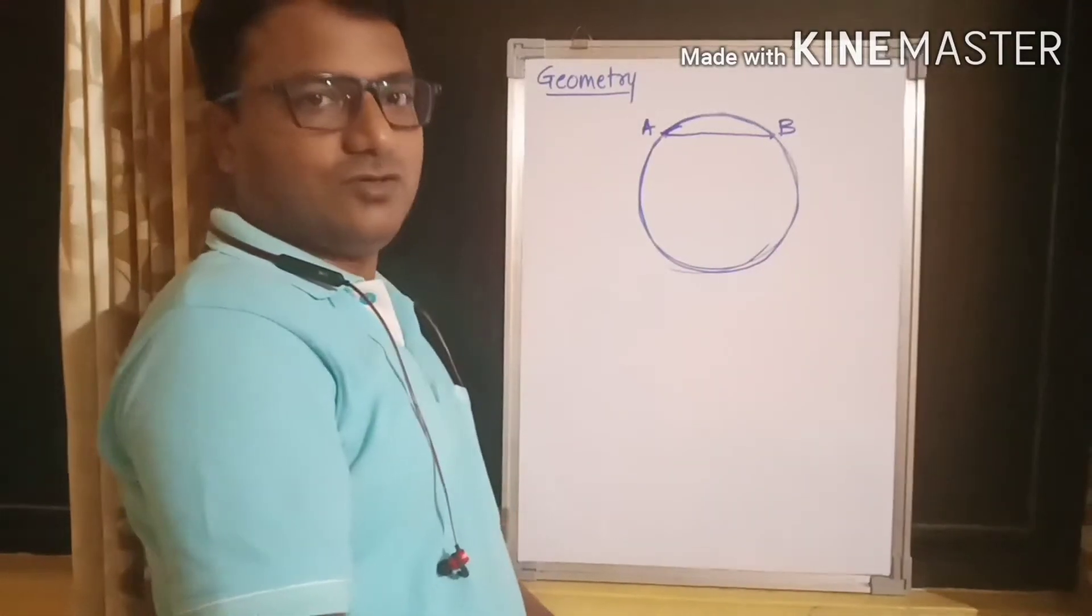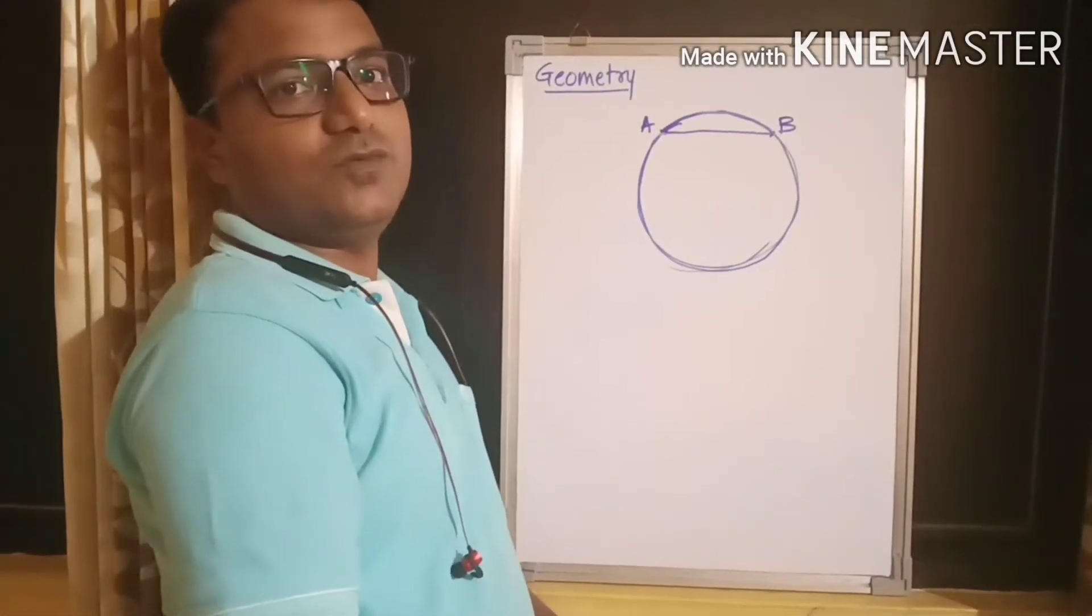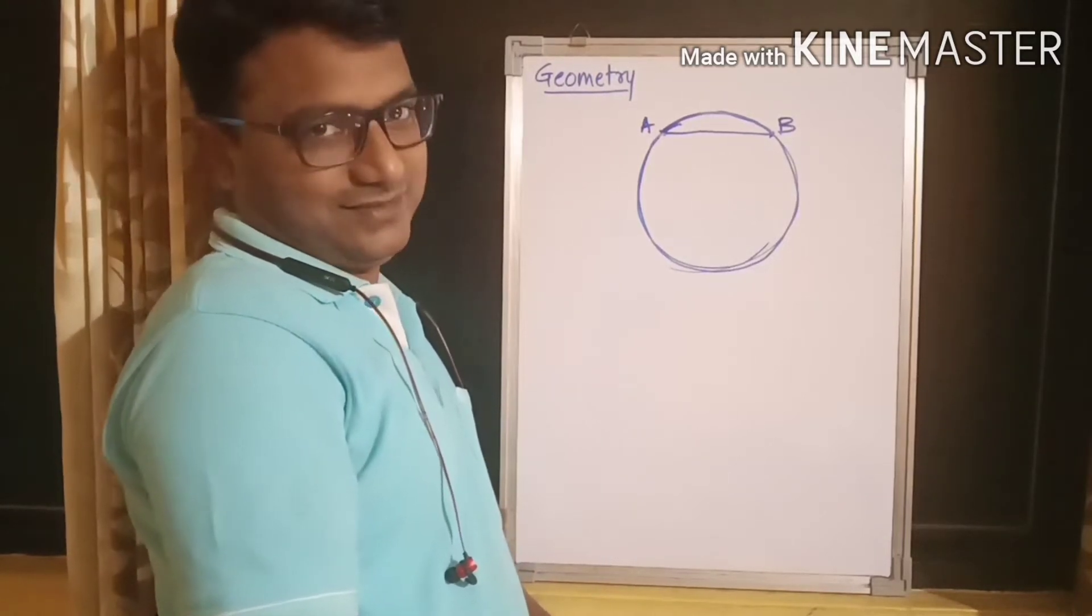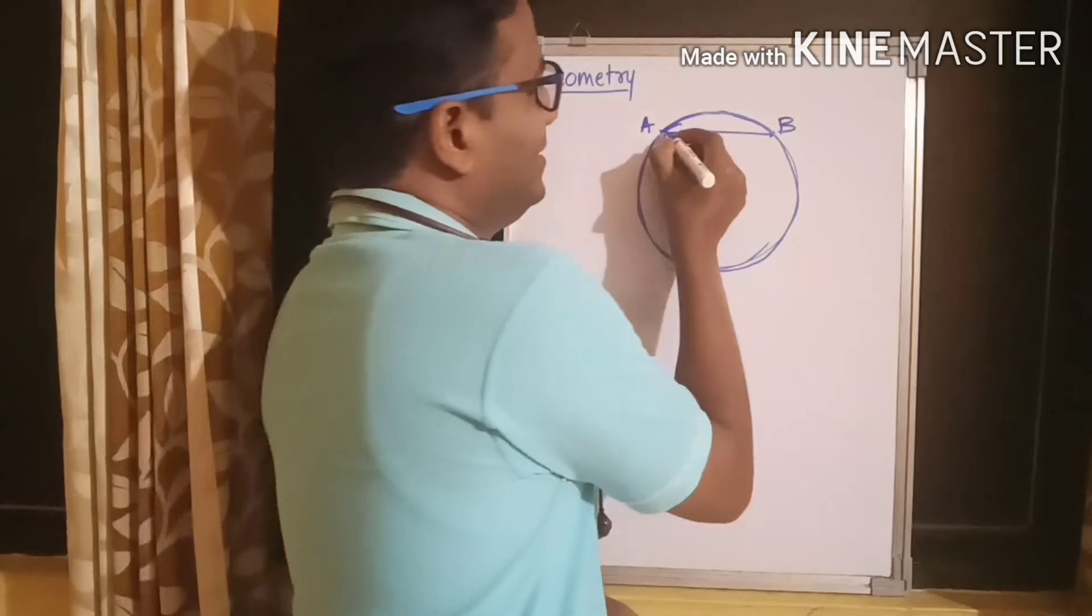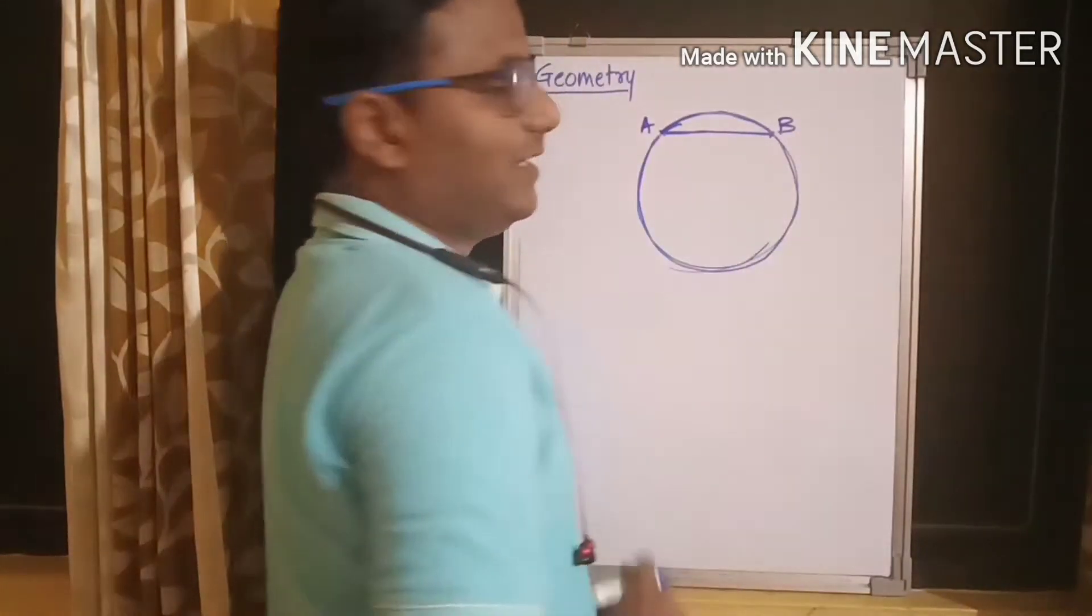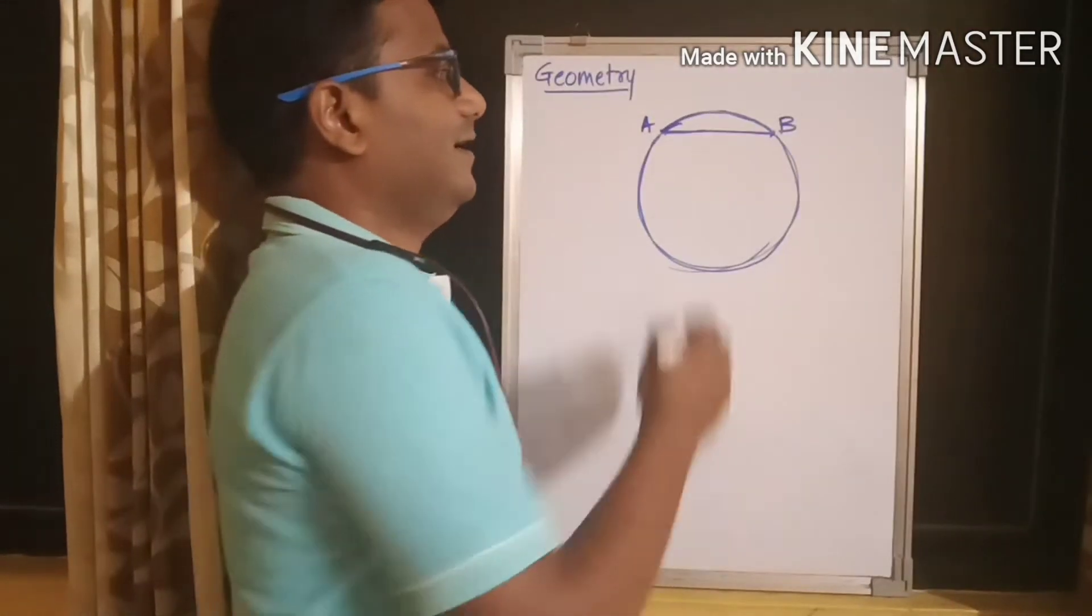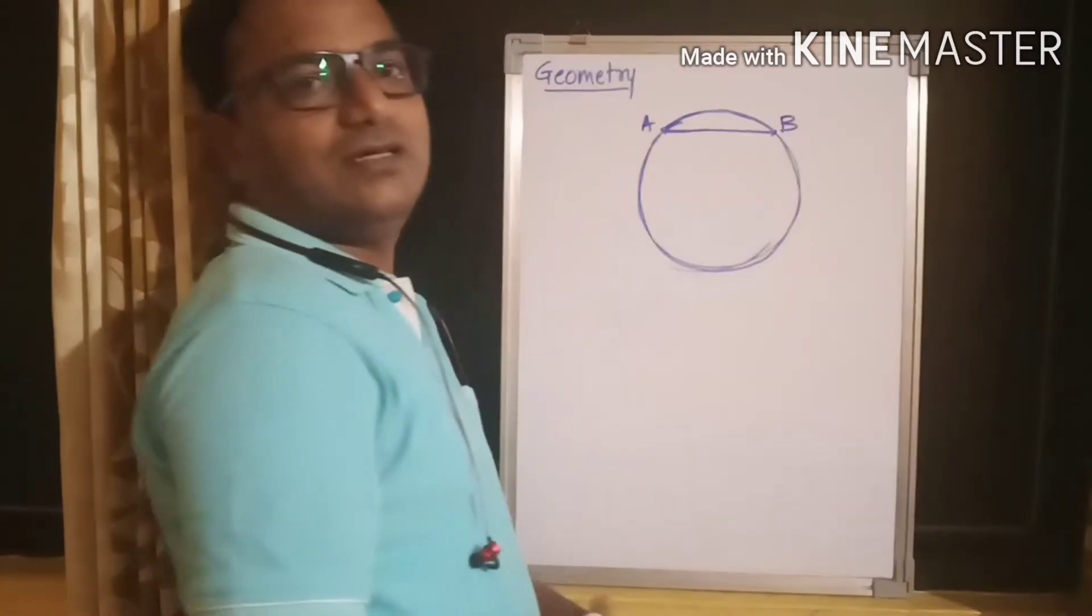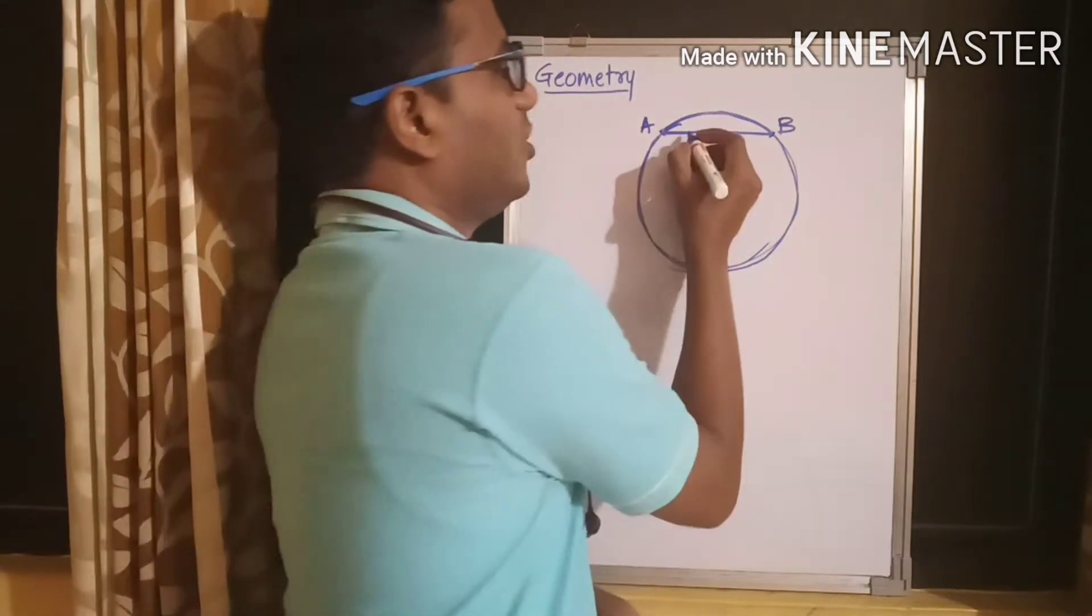Out of which, now we have just come across two basic concepts of geometry: chord and arc. You can see this particular path is a straight line, and this particular straight line is connecting two points on the periphery of the circle. This is called as chord.